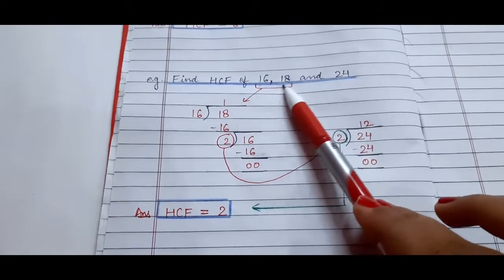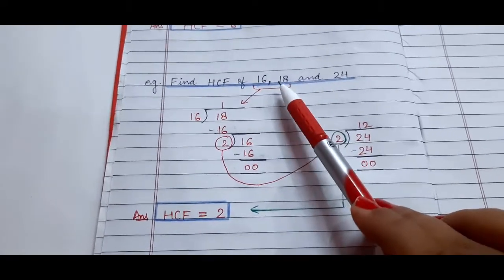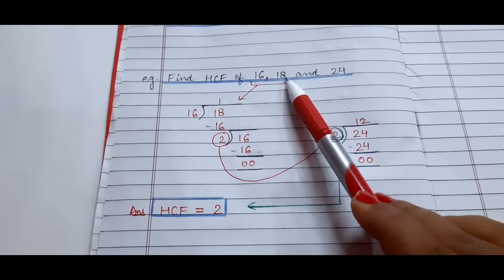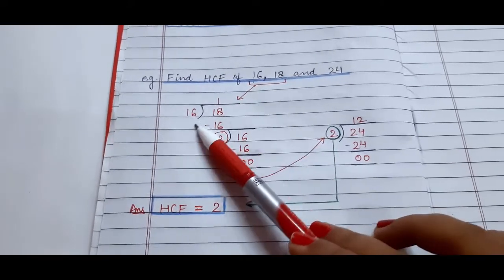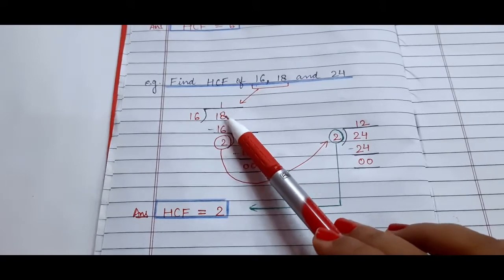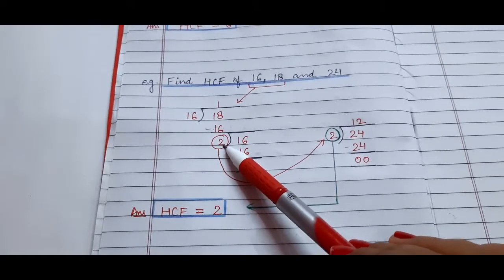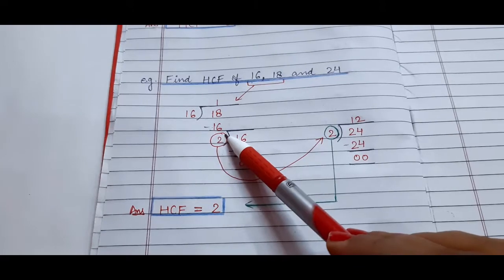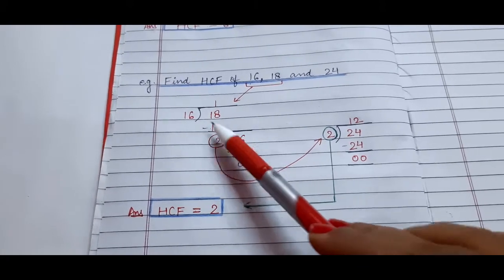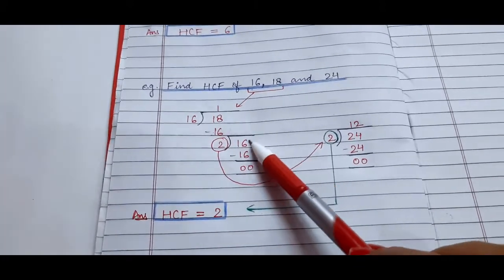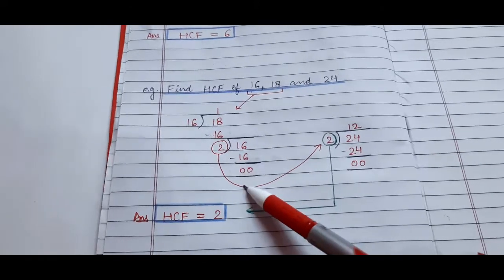First, we will take the first two numbers and divide the bigger number by the smaller one like this. 16 ones are 16, remainder is 2. Now we will divide this number, that is 16, by 2 and we will get remainder 0.